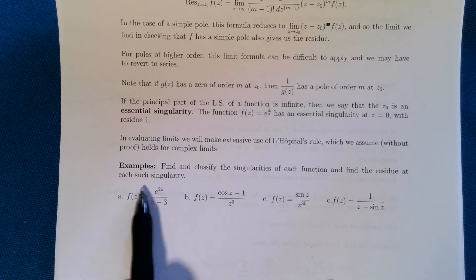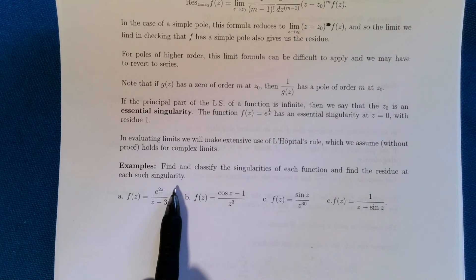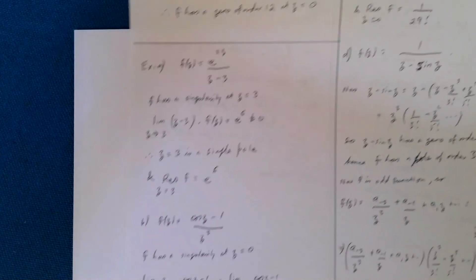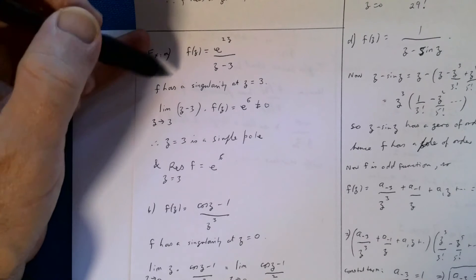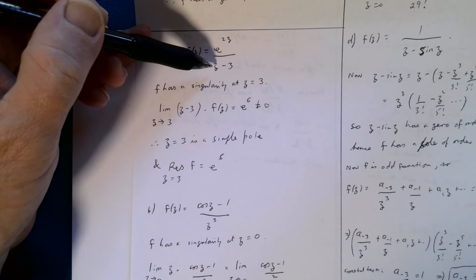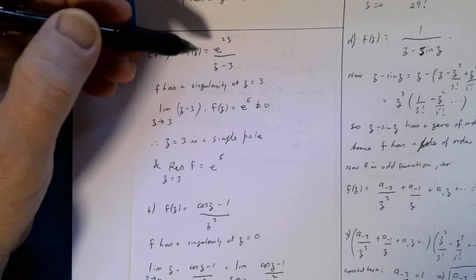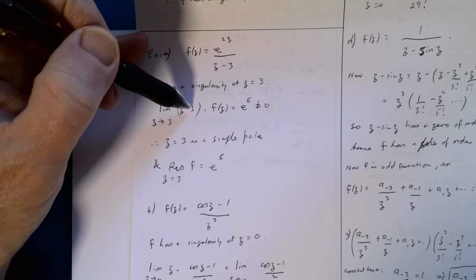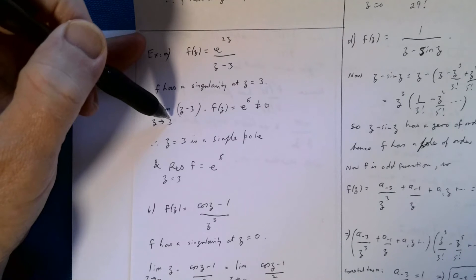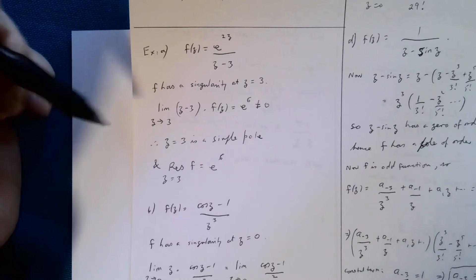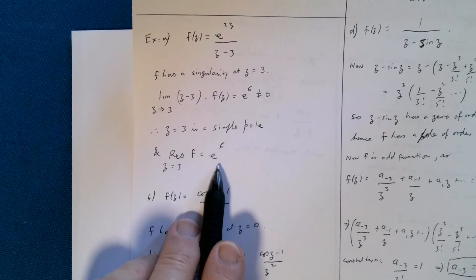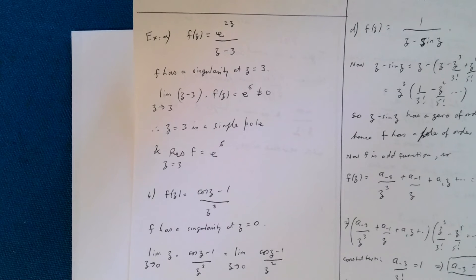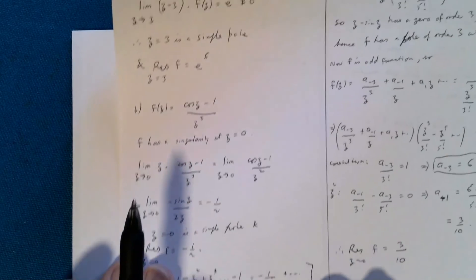Now we classify singularities and find residues by example. First: f(z) = e^{2z}/(z − 3). This obviously has a singularity at z = 3. Multiplying by (z − 3) cancels the denominator, leaving e^{2z}; putting z = 3 gives e⁶ ≠ 0. So z = 3 is a simple pole and the residue is e⁶.